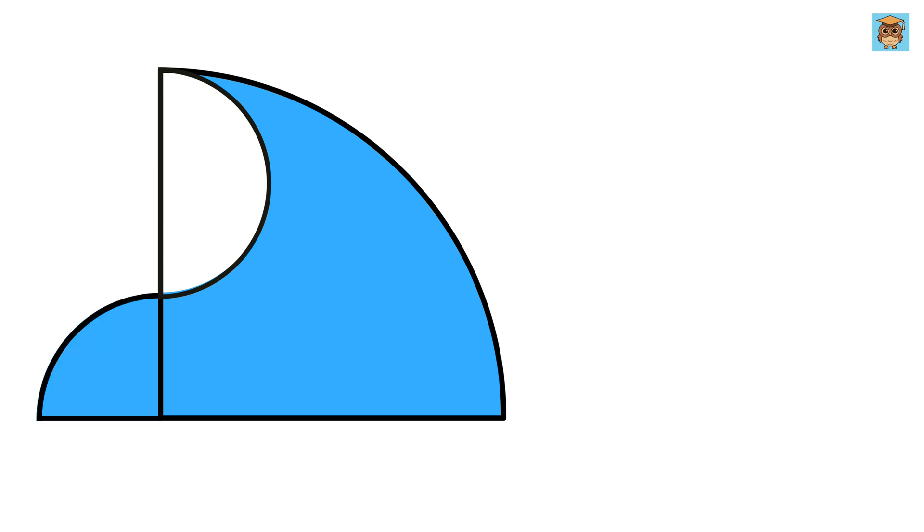Then we also have another small quarter circle which intersects this big quarter circle at this point. Now we are given that this length is 8 units. Our job is to find the area of this blue region.